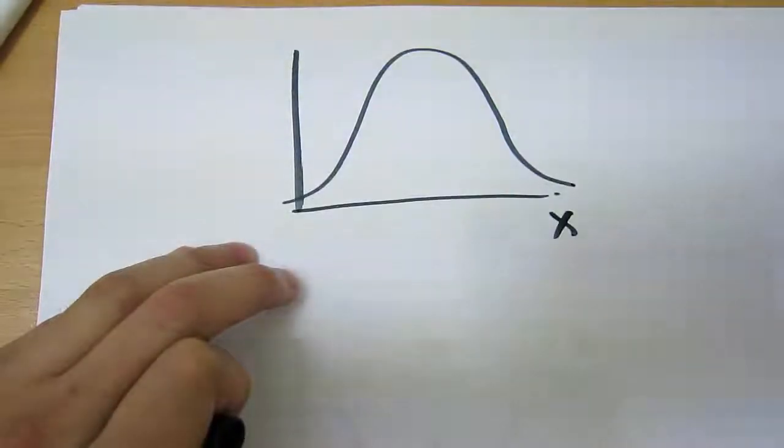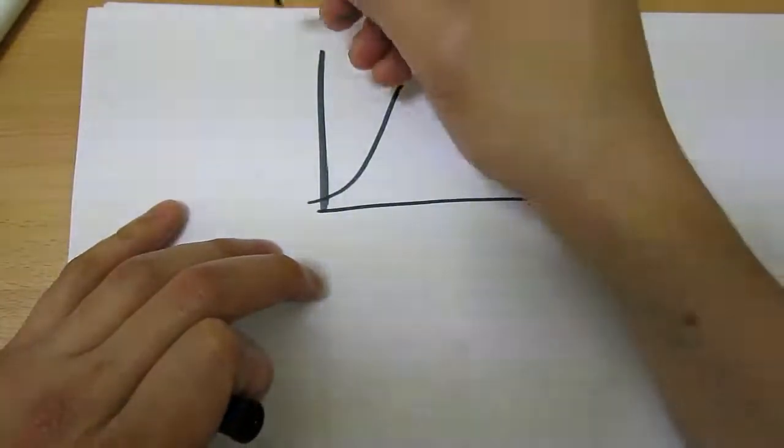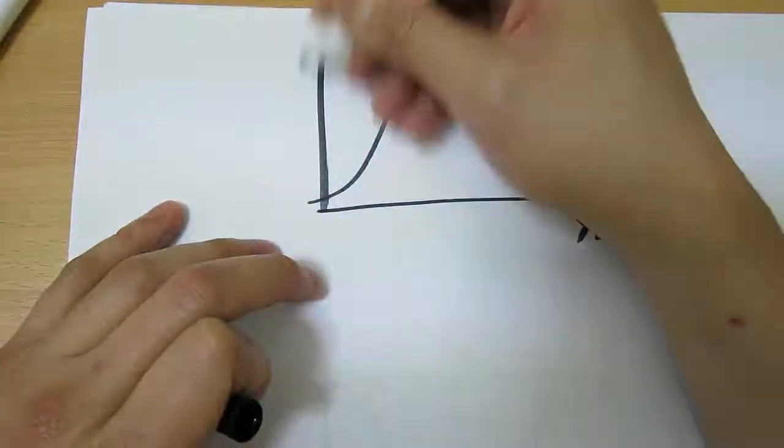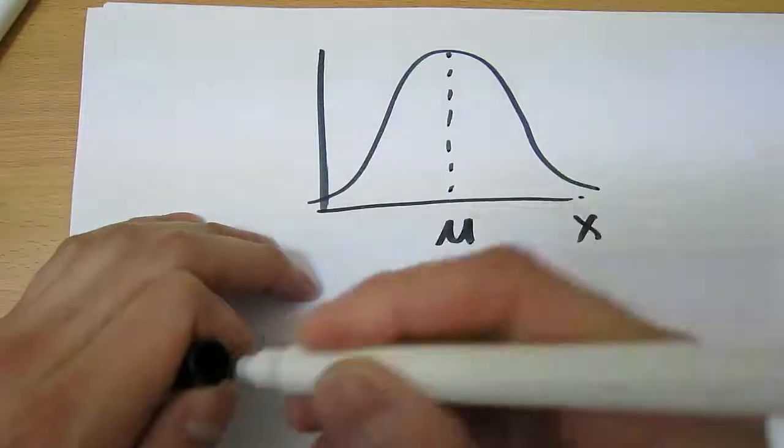What we usually have is on the x-axis we have a whole bunch of values, a whole bunch of possible x-values that may occur. And on the y-axis we have frequency or probabilities, and it's symmetrical around the mean. Now what does this mean?